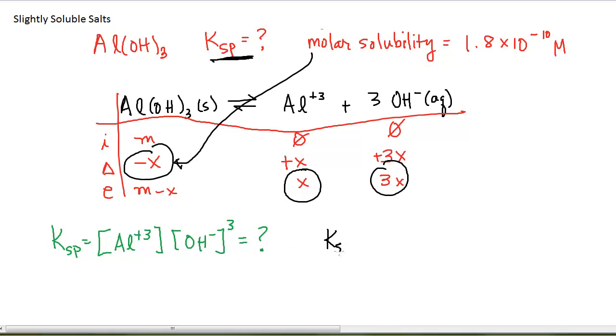And so my Ksp is going to be equal to the aluminum is X, so 1.8 times 10 to the minus 10. The hydroxide is 3X, so 3 times 1.8 times 10 to the minus 10. And that whole thing is cubed. Be careful punching it in your calculator. Make sure you cube this whole amount after multiplying by 3, and that will solve for your equilibrium constant. And we do get a very small Ksp. Our Ksp, it looks like we need to go to 2 sig figs, is 2.8 times 10 to the minus 38. Remember that it's unitless. So this is the numerical value for our Ksp, our solubility product constant, given the molar solubility.